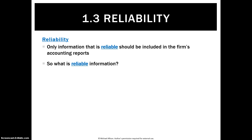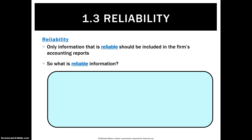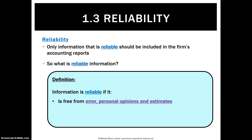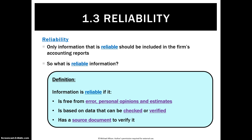To come up with a definition: information is reliable if it is free from error. An opinion or an estimate is based on data that can be checked or verified, and has a source document to verify it.